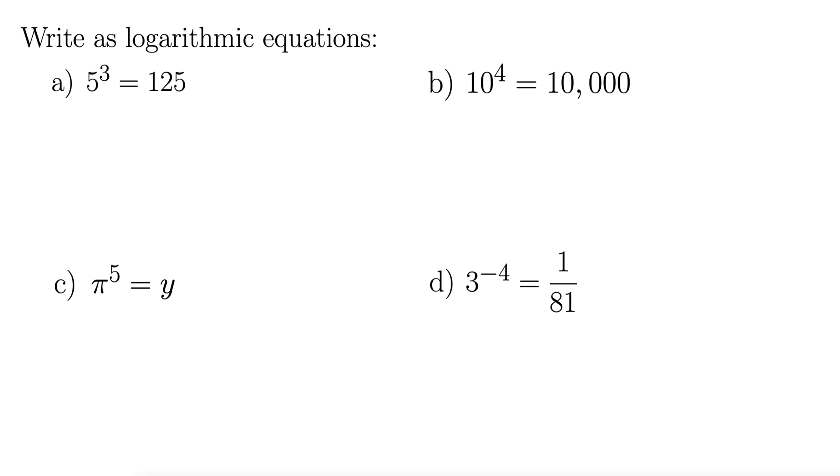Starting with a, 5 cubed equals 125. Here's how you do it. The base here is 5, so that stays the base in your logarithmic equation. So log base 5.